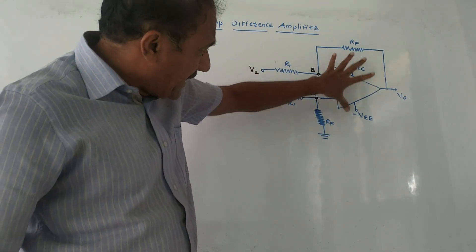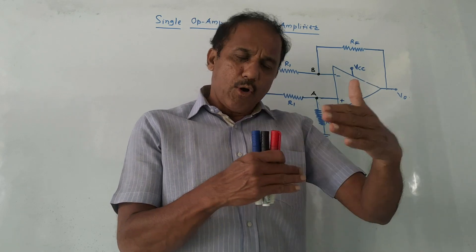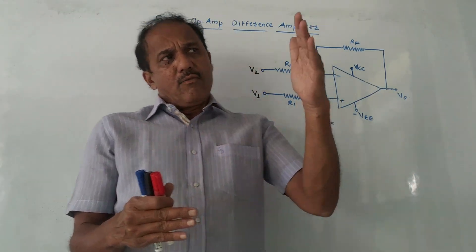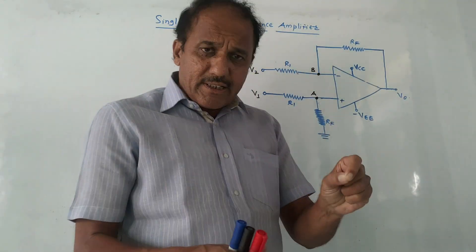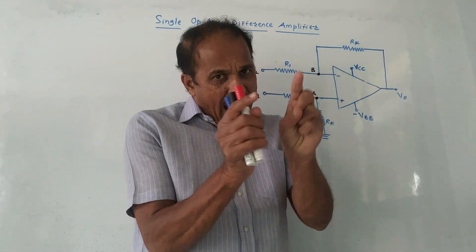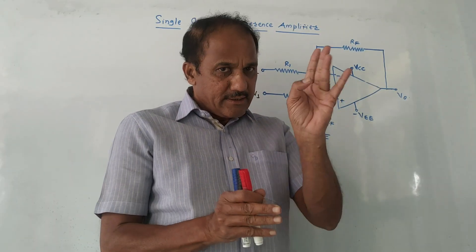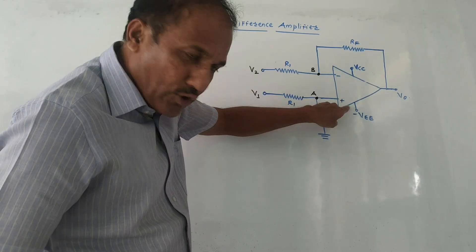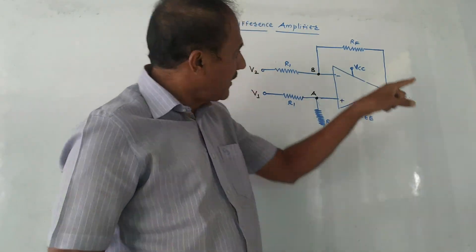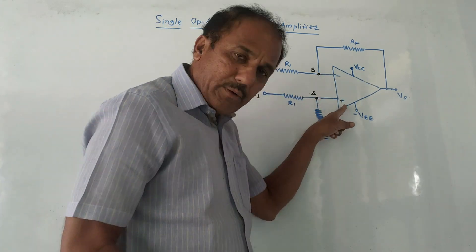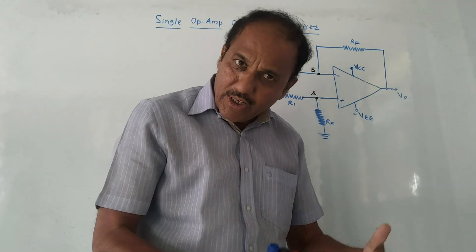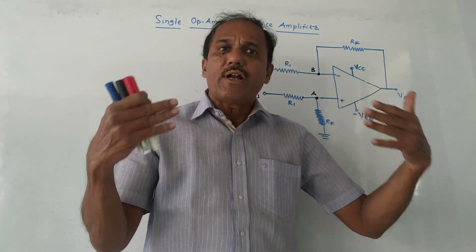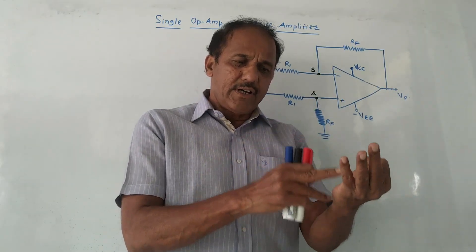This is the circuit diagram. The major important thing is that you need to note the different voltages connected at the input side. In the case of a summer or adder, the input is connected to only one terminal — either the inverting or non-inverting terminal. The inverting terminal is the negative terminal and the non-inverting terminal is the positive terminal. In an adder, all input voltage sources — say V1, V2, V3 — are connected either at the positive terminal or at the negative terminal.